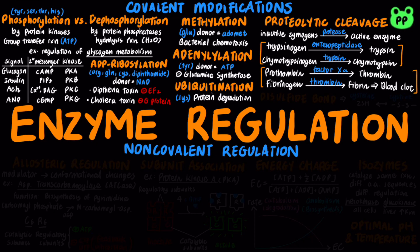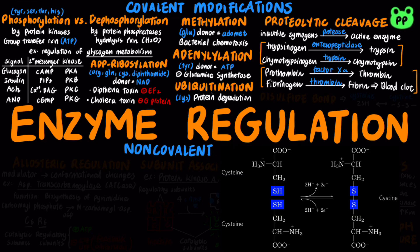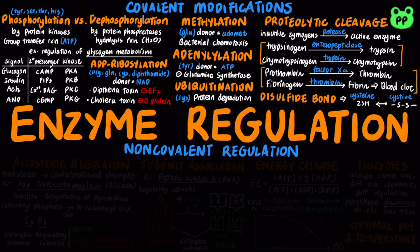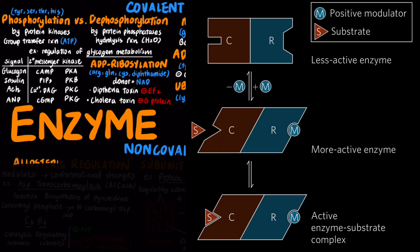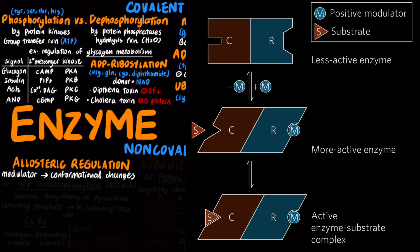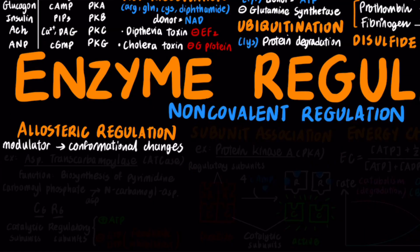Finally, many enzymes are regulated by the formation and breaking of disulfide bonds. Some enzymes are regulated noncovalently through allosteric regulation, in which a modulator binds to the allosteric site that is different from the active site and causes a conformational change that either activates or inactivates the enzyme.